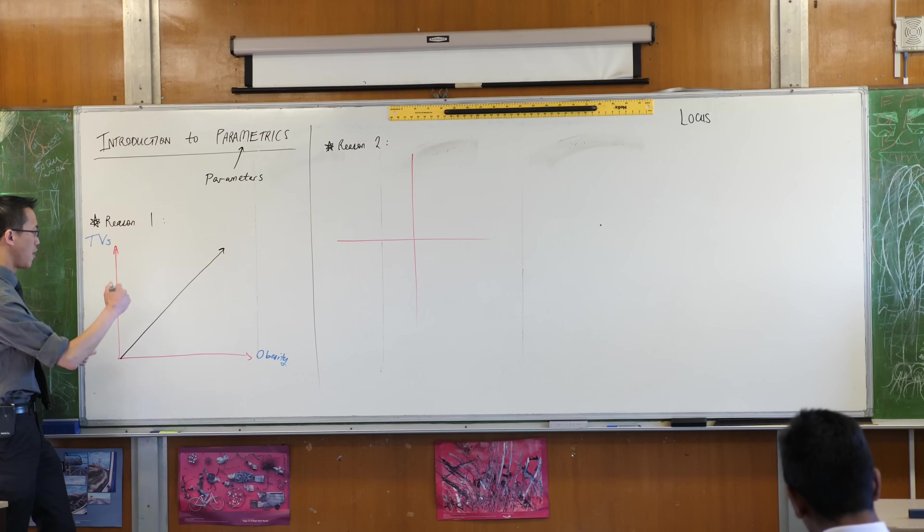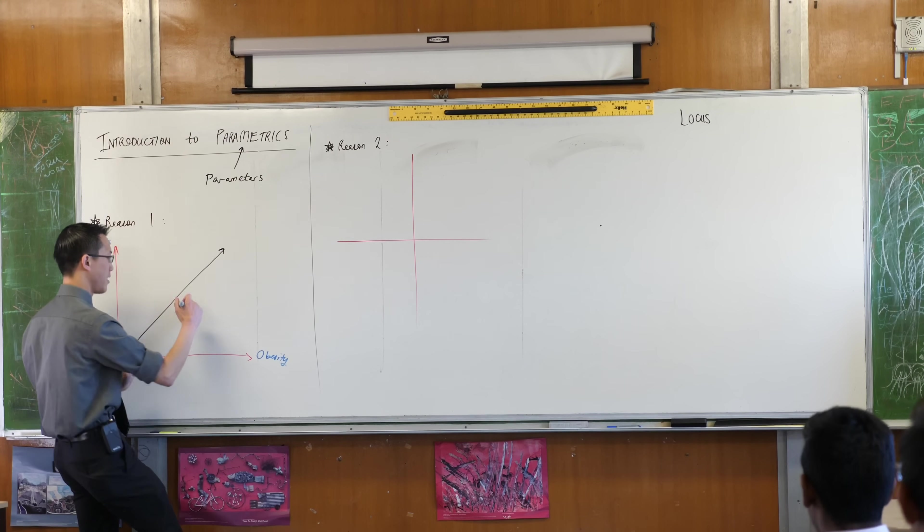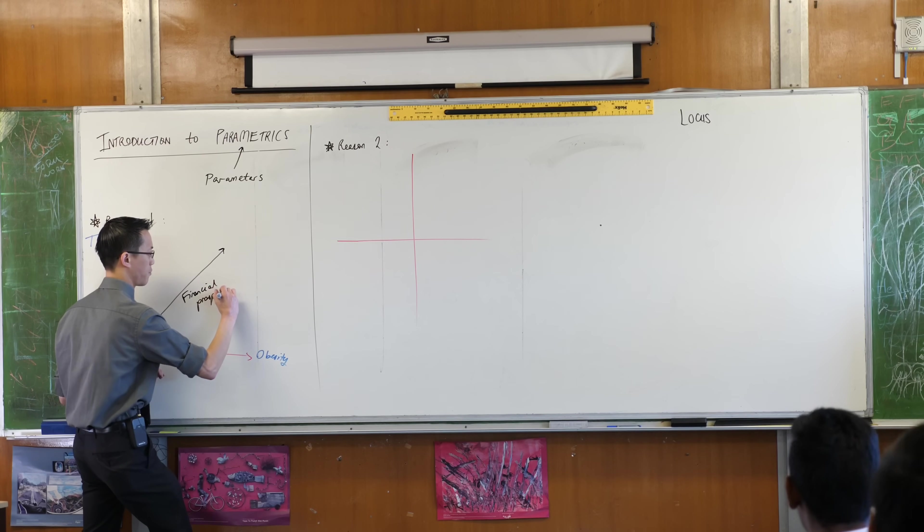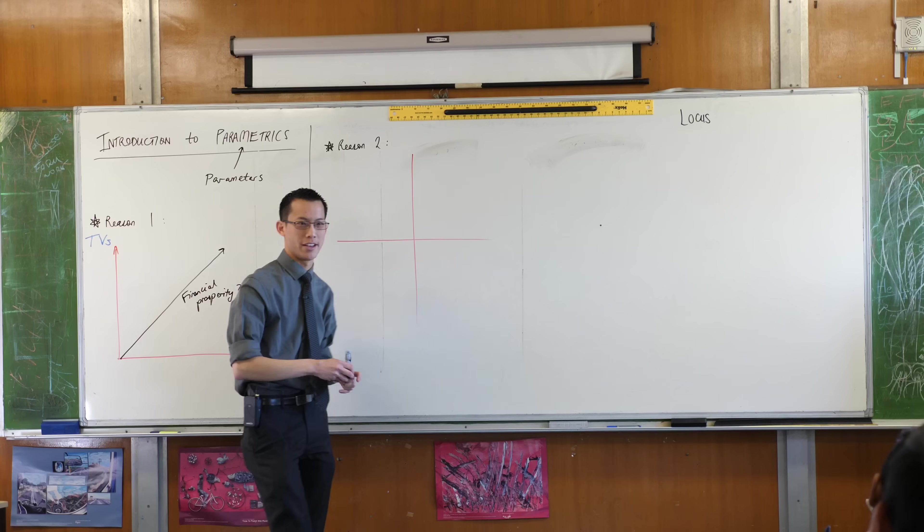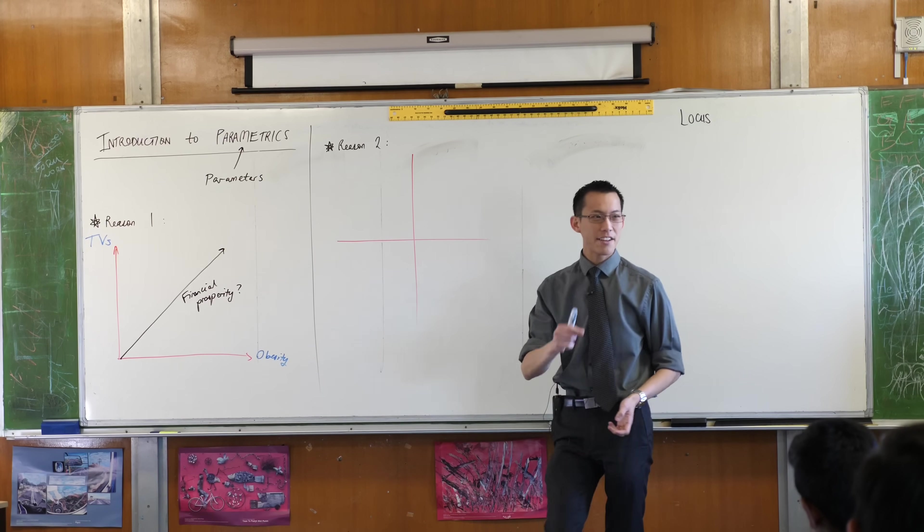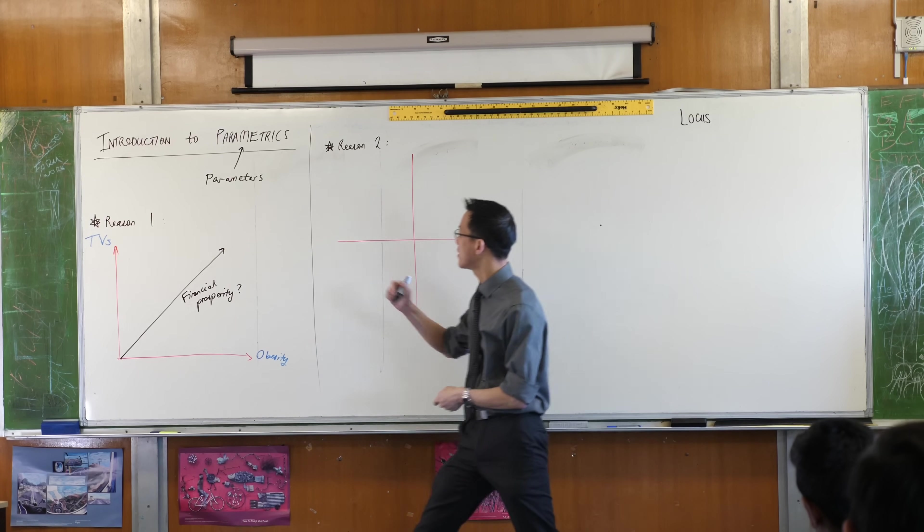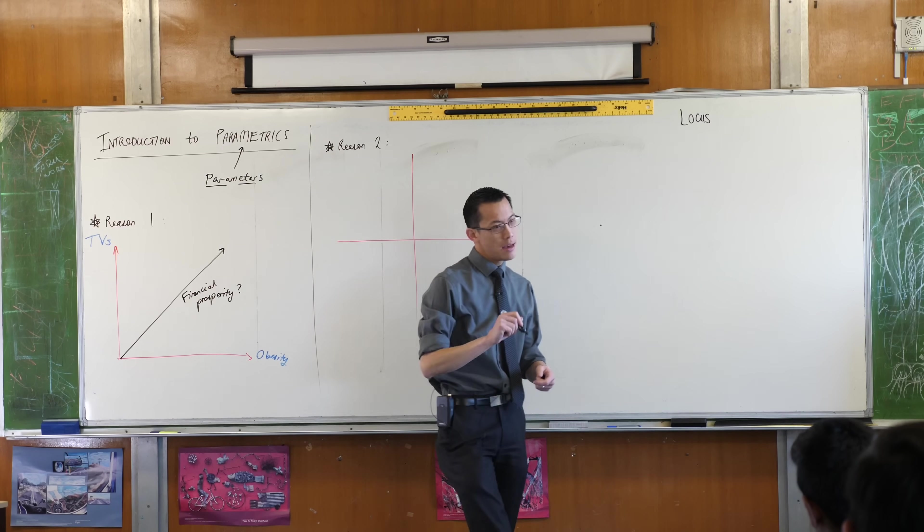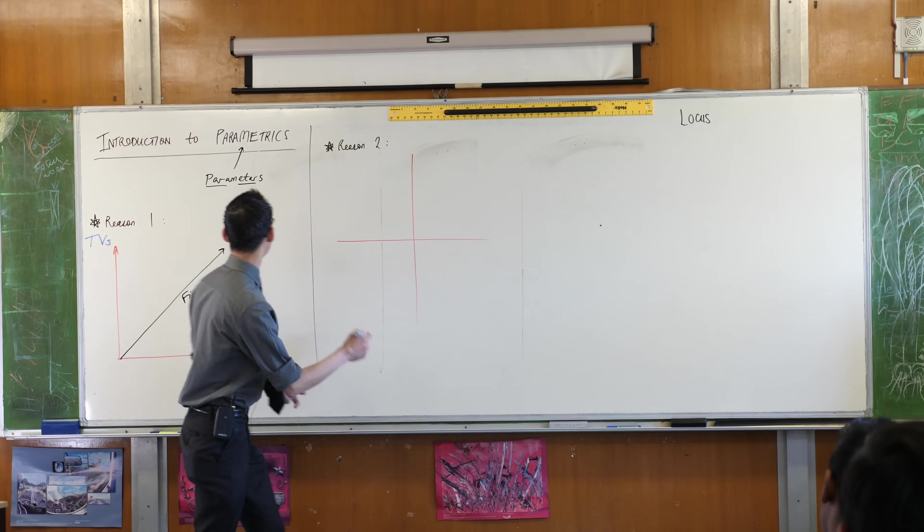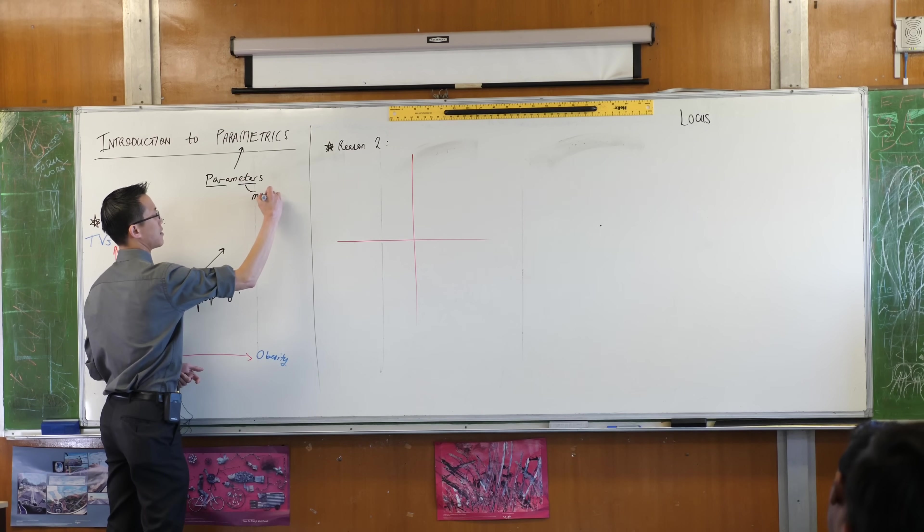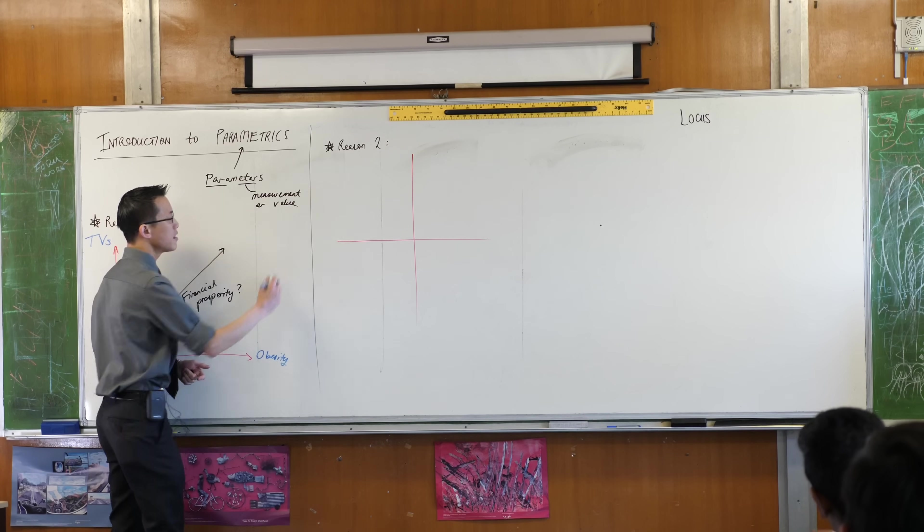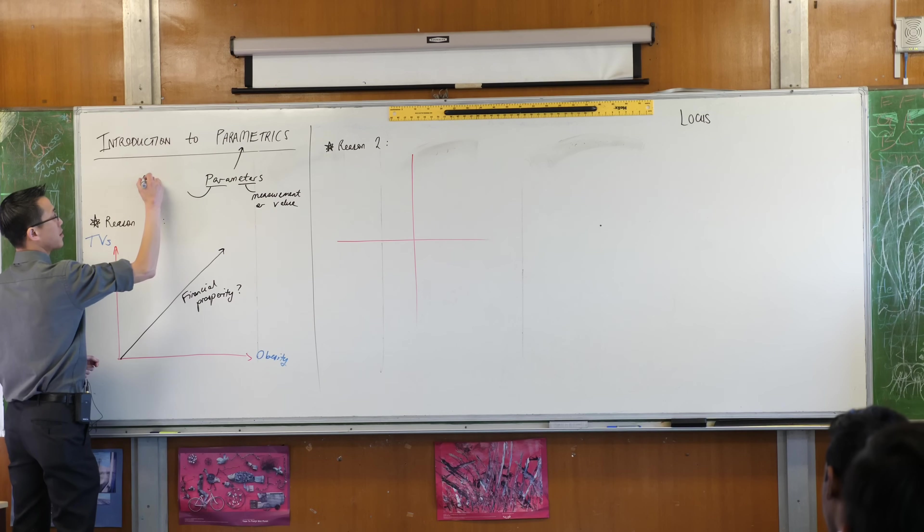So this idea here of somewhere hiding in here financial prosperity, it's this other measurement that's kind of hidden there or it's off to one side and in fact that is exactly what parameter means. Parameter like when you have a metric of some kind. A metric is when you measure something, a measurement or a value.